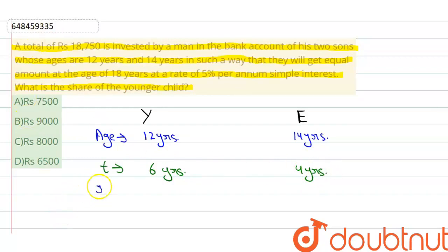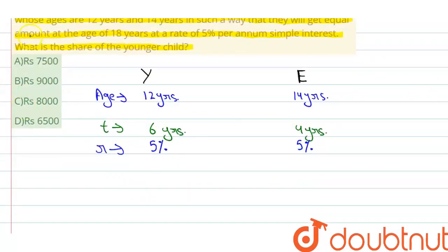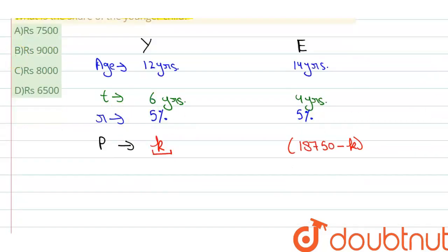Rate of interest is the same for both: 5% and 5%. Now let's talk about principal amount. The principal amount for the younger child we'll assume as k, and we need to find the value of this k. For the elder child, the total is 18,750 minus k units. Now let's find their amounts.